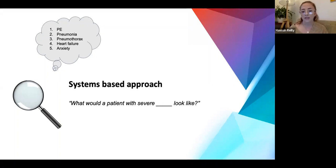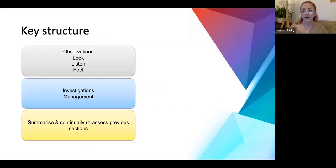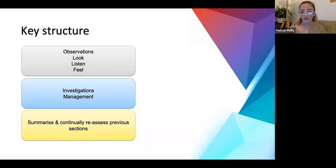A helpful question to ask yourself is: 'What would a patient with severe COPD look like?' - so you already have an idea in your head of what you're looking for going into the situation. The key A2E structure going A, B, C, D, E: first do the actual examination - ask for observations, then look, listen, feel - then investigations and management. Summarize at the end of each section so you don't get lost. Continually reassess previous sections: if in breathing you started oxygen, go back and check whether their sats have gone up.